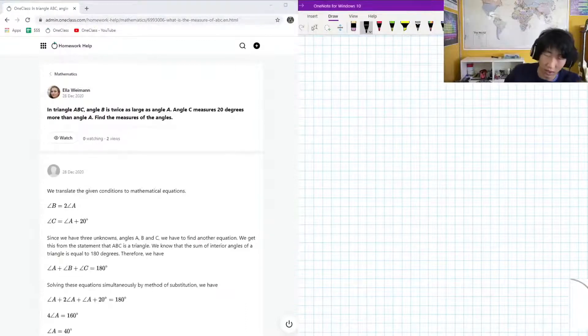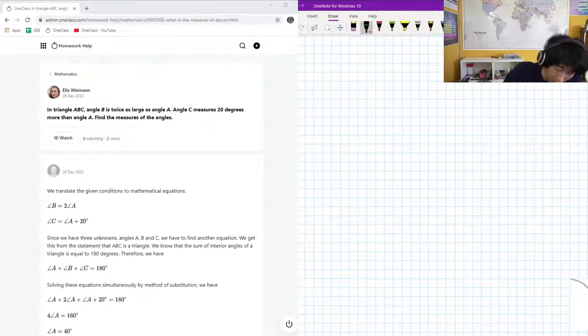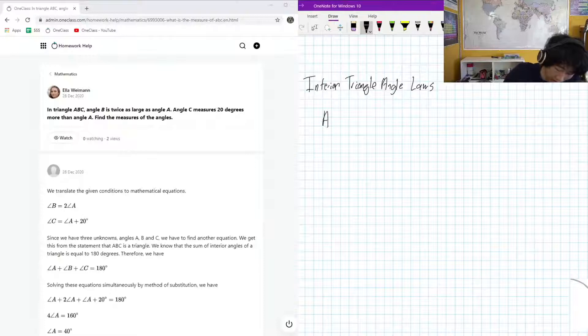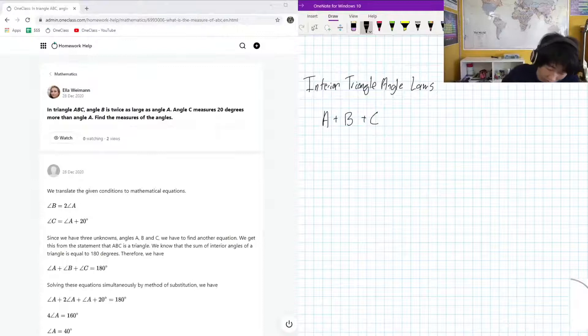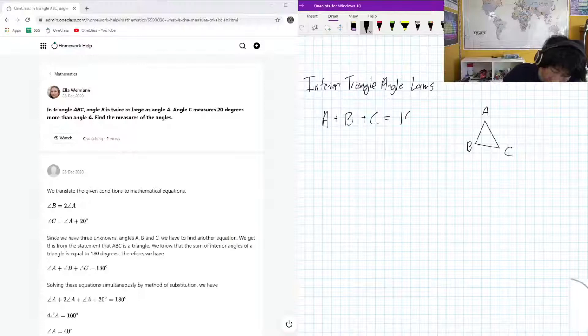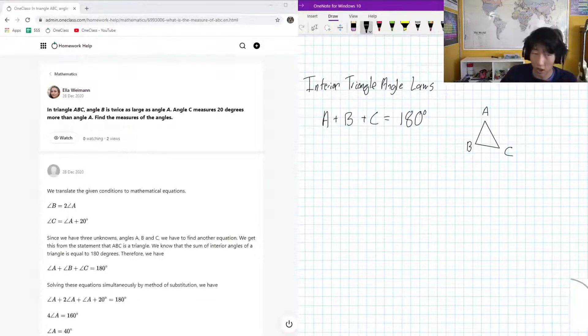So what are some fundamental things that we know about the interior angles of triangles? We know that interior triangle angle laws is that A plus B plus C, that's the angle at each one of the corners, like if A, B, C is a triangle like this, we know that the sum of all of them is 180 degrees, a fundamental law about triangles.